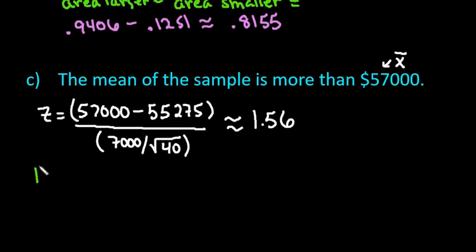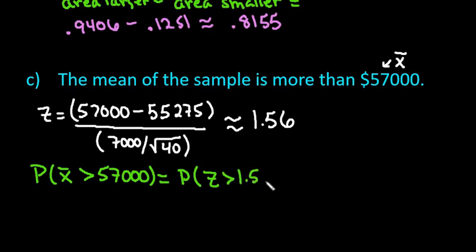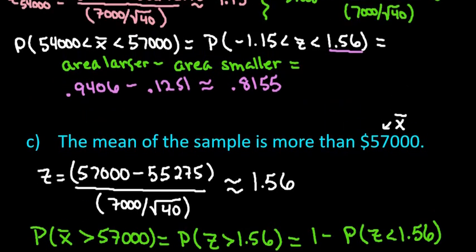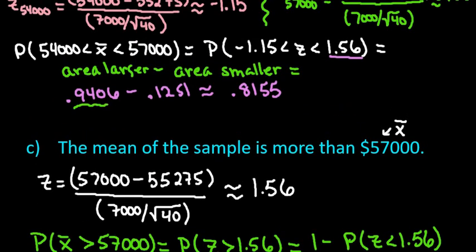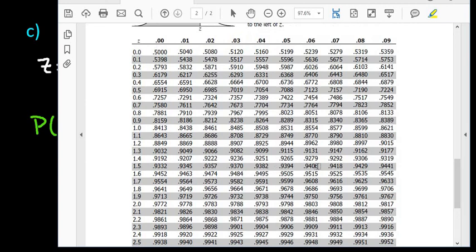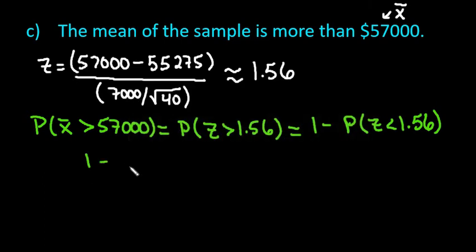The probability that our sample mean is greater than $57,000 equals the probability that our z-score is greater than 1.56. Traditionally, your textbook will teach you to do 1 minus the area to the left of 1.56. We already found that value: 1.56 corresponds to 0.9406 in the table. So 1 minus 0.9406 equals 0.0594.